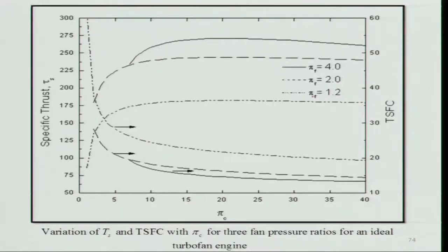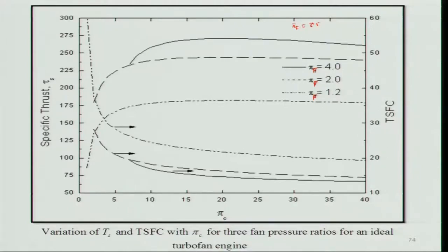Varying the fan pressure ratio π_f (1.2, 2, and 4): specific thrust increases with π_f up to an optimum of approximately π_f ≈ 3.5 (not shown in the diagram) and then decreases. TSFC also decreases with increasing fan pressure ratio up to the optimum. There are many permutations and combinations of these parameters.